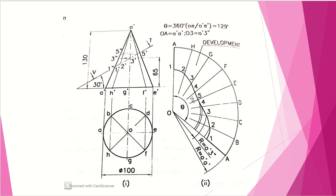You can see the points 1, 2, 3, 4, 5, 4, 3, 2, 1 forming a curve. This is the cut portion of the cone — the remaining truncated portion — which should be highlighted in dark lines. The other removed portion should be in light lines. With this, I am finishing lecture number 14.